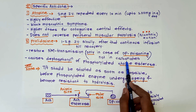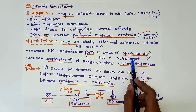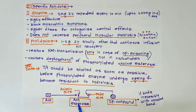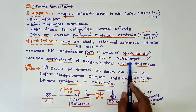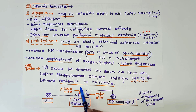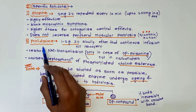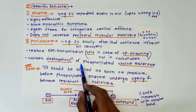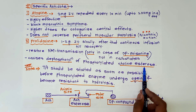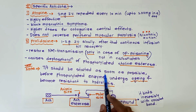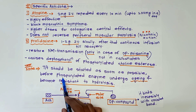Pralidoxime is only effective in cases of organophosphate poisoning and not in cases of carbamates. This is because organophosphate compounds bind to the steric site of the acetylcholinesterase enzyme, whereas carbamates bind to both sites, leaving no space for pralidoxime to act. Pralidoxime causes dephosphorylation of phosphorylated cholinesterase.